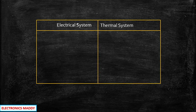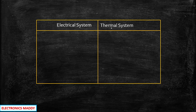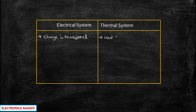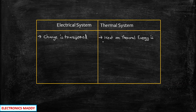This is associated with a thermal system, and we will be comparing it with an electrical system so that you will be able to understand this concept in a much better way. In an electrical system, charge is transferred from one point to another within the circuit when the supply is turned on. But in the case of a thermal system, heat or thermal energy is transferred. That is the primary difference between an electrical system and a thermal system.